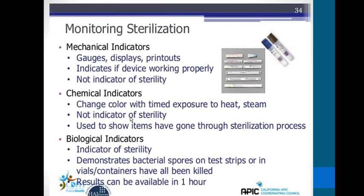So in summary, there are three methods: mechanical indicators, which are not an indicator of sterility; chemical (process) indicators, which are also not an indicator of sterility; and the biological indicator, which is the only method that demonstrates sterility by showing that bacterial spores on test strips or in vial containers have been killed. Results are available in one hour.